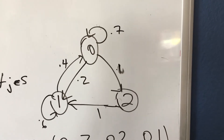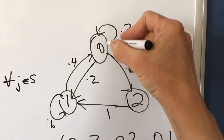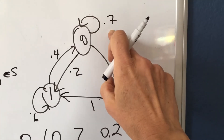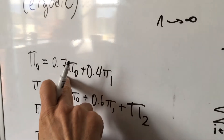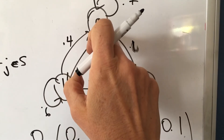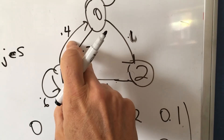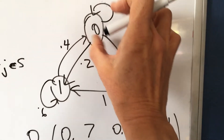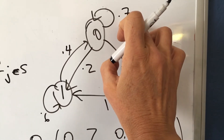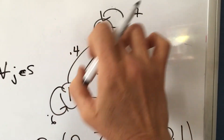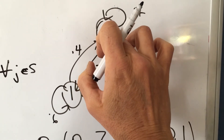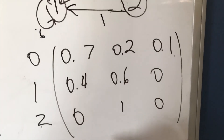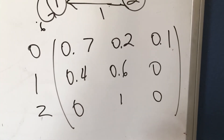Looking at the limiting probabilities — the probabilities of coming into state 0 — from going from 0 into 0 that's 0.7, so 0.7 times pi nought; going from 1 into 0 is 0.4, so 0.4 times pi 1. You can either read the probabilities for each arc coming into the state times the limiting probability of the state it came from, or read down the columns of the transition matrix. I prefer using the transition matrix — I think that's a little bit easier.